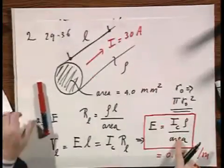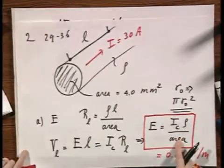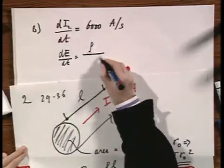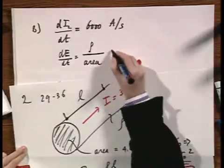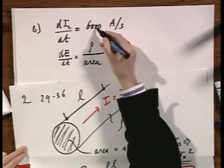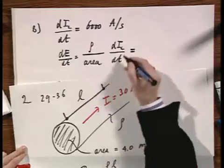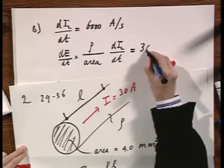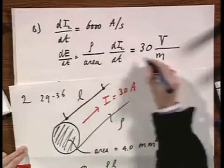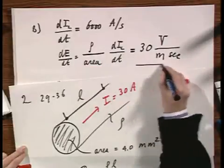Well, that's the derivative of this thing. So that is ρ divided by the area times dIC/dt. And you know that, that is 6000. If I stick in the numbers, I may well have made a mistake. I find 30 volts per meter per second. That would be my answer.